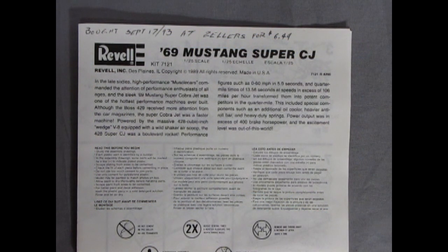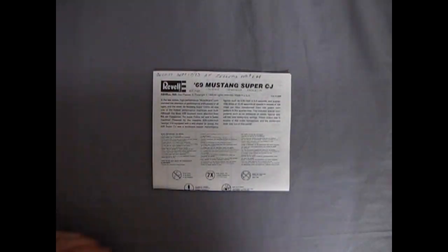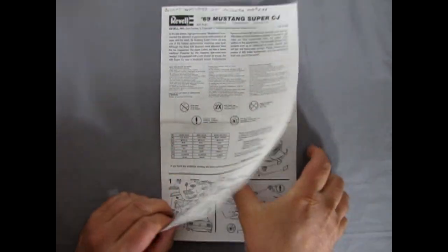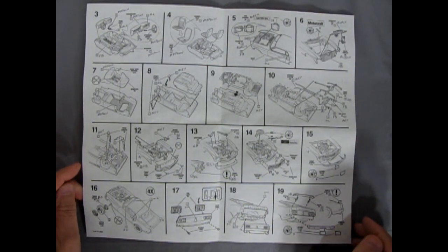And then we'll look at those instructions. And here we have our instruction sheet for our '69 Mustang Super CJ. And I'll just zoom back here because of course we have to open this. And it opens up pretty wide. It's not too many panels.